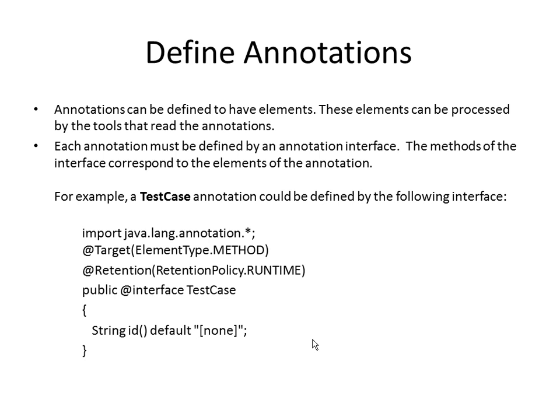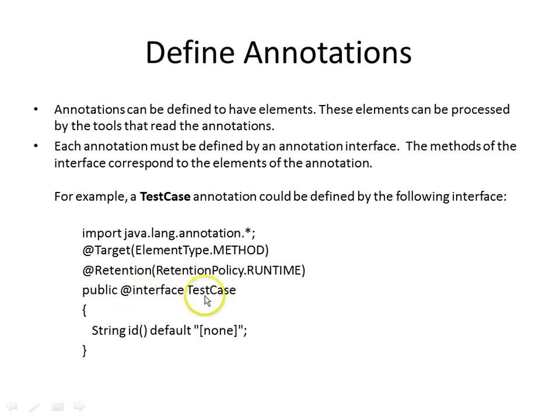Annotations can be defined to have elements in them, and these elements are processed by the tools that read the annotations. When you are creating an annotation, it must be created using an annotation interface. For example, if you are creating an annotation called TestCase, you would say: public @interface TestCase.